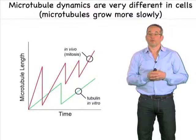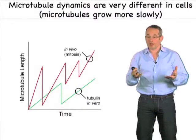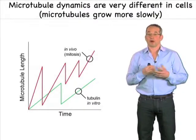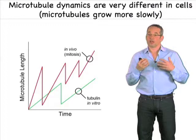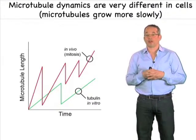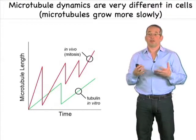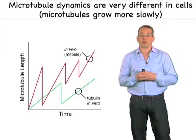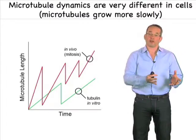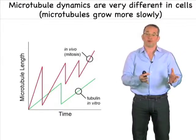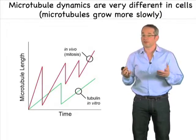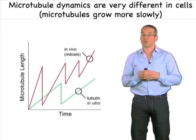Microtubules in vivo, in the cell, have very different behavior than microtubules in a test tube. The key difference is that, for any particular tubulin concentration, microtubules grow faster in vivo than they do in a test tube — and they grow much faster, sometimes 10 times faster than you expect.